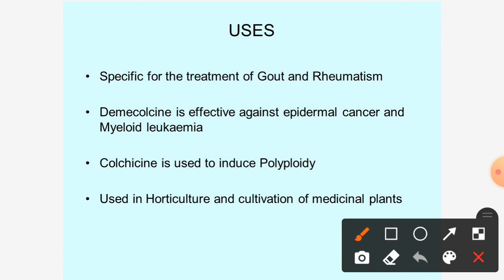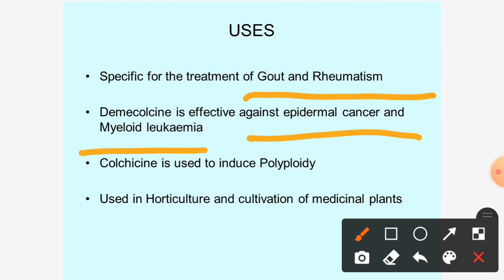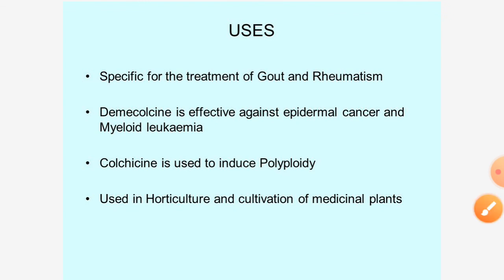The uses of Colchicum: it is specifically used for the treatment of gout and rheumatism — gout is also a joint disorder. Demecolcine is effective against epidermal cancer and myeloid leukemia. Colchicine is used to induce polyploidy and is used in horticulture and plant cultivation. This completes the anti-rheumatic drugs category, covering Guggul and Colchicum.